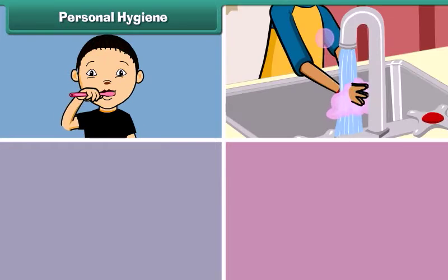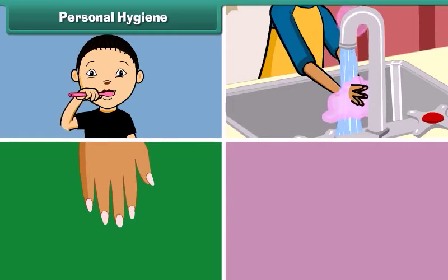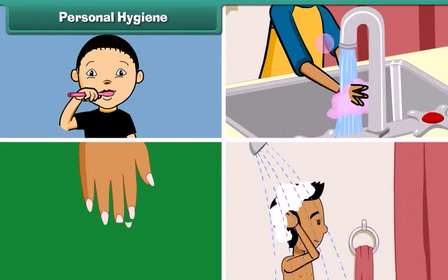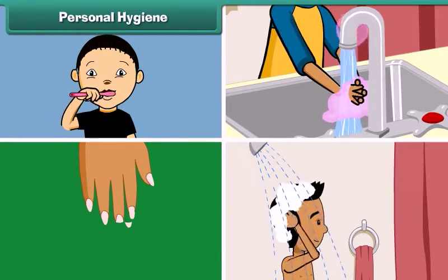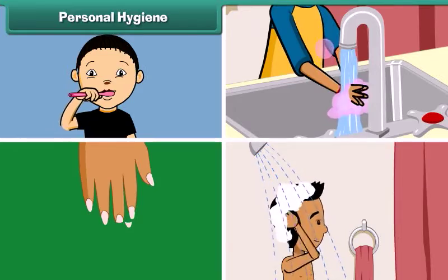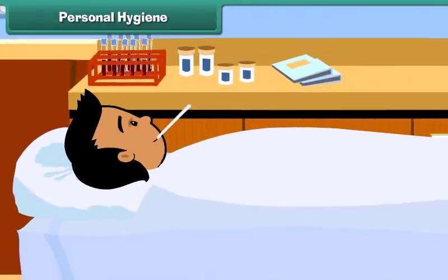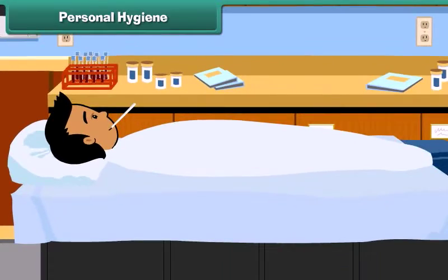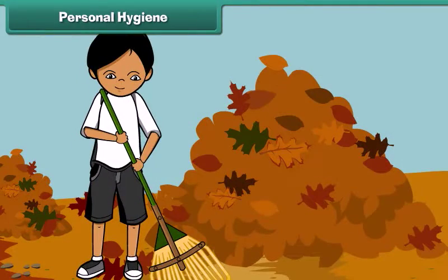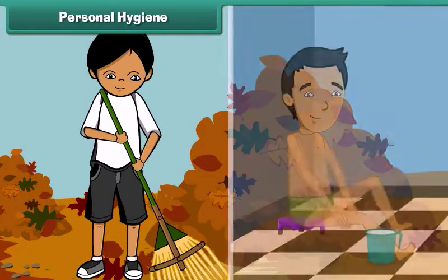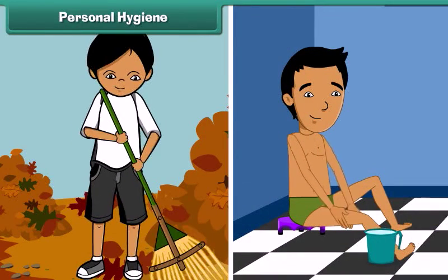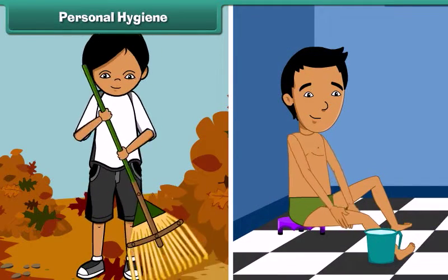Personal hygiene involves keeping one's teeth, hands, nails, hair, body, and clothes clean. However, that is not enough. A clean body in a dirty surrounding can still take ill, so it is important that we keep our surroundings clean as well. Personal hygiene and cleanliness of surroundings go hand in hand.